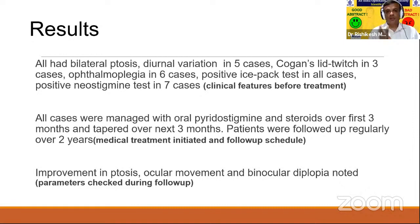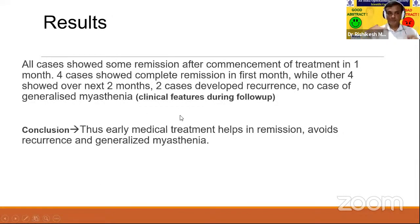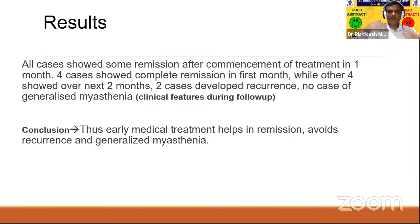In this particular study, we had eight patients. The first part includes clinical features before treatment, then the medical treatment initiated, and whether patients were followed up regularly for two years. The parameters checked and clinical features seen during follow-up have been mentioned. It should cover all eight patients you committed to. The conclusion — that early medical treatment helps in remission, avoids recurrence and generalized myasthenia — is related directly to the aim. Written this way, all ideas become crystal clear in the minimum words expected.